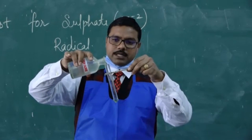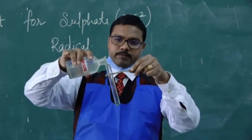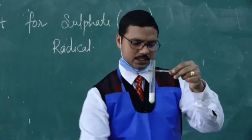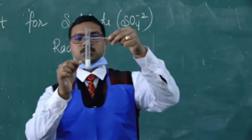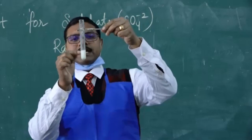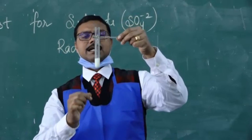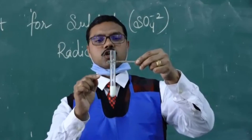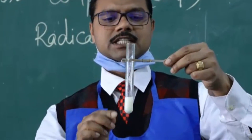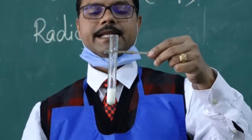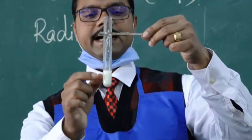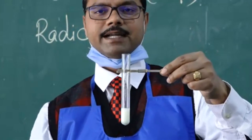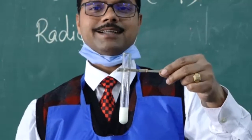As soon as the drop of barium fluoride is added to the solution, you can see a dense white precipitate forms. This white precipitate indicates the presence of sulfate radicals, because when barium reacts with sulfate it forms barium sulfate, and the color of barium sulfate is white. So this is how we identify sulfate radicals.